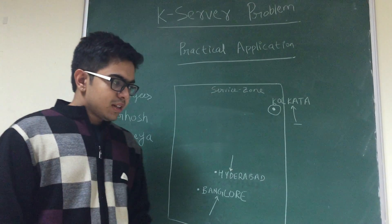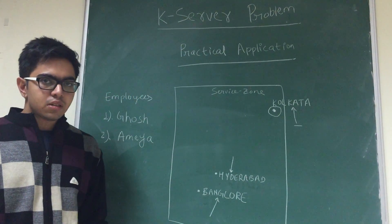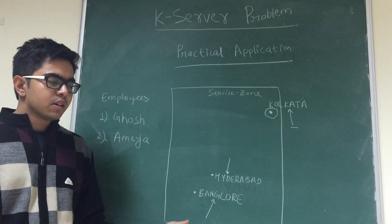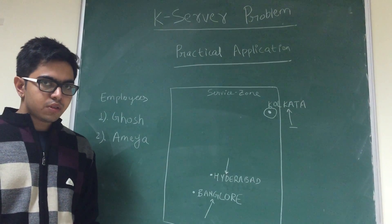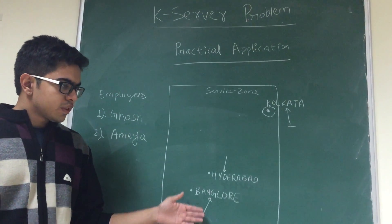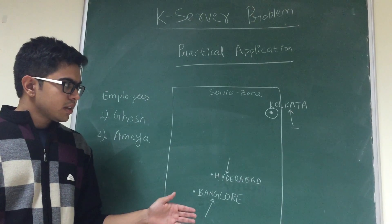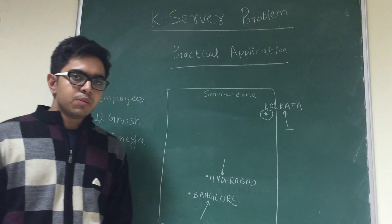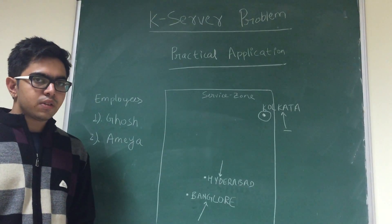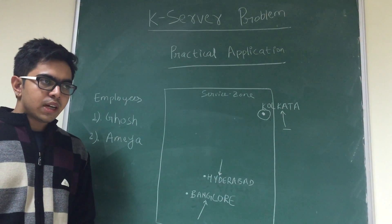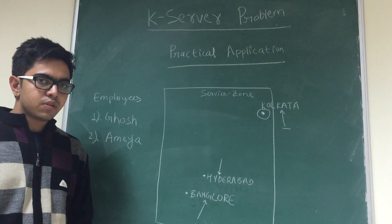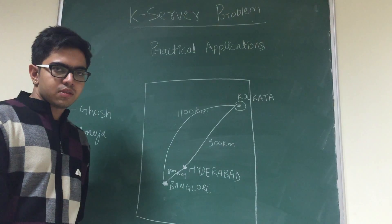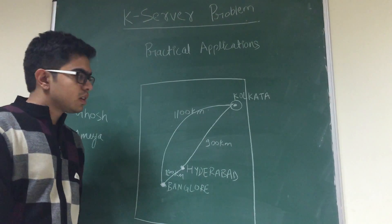But, we have made an assumption over here. Assumption is that we already know the nature of the request that we are getting. But, since we cannot predict the future, we don't know the nature of the request and the time and the location where the request might arrive. So this is the main problem in the online mode of the K-Server algorithm. You don't know at what point and at what location the request will be coming.